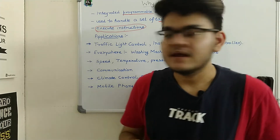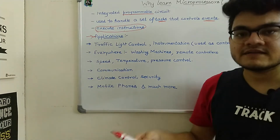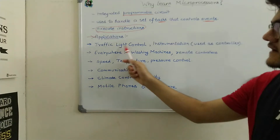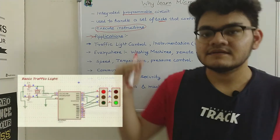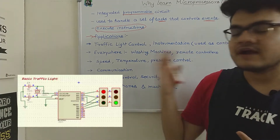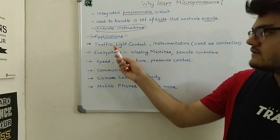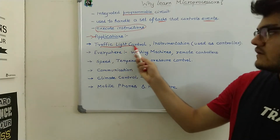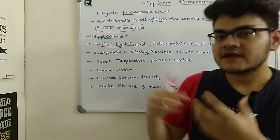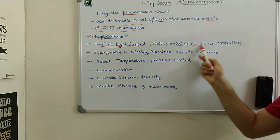Let's look at the applications of microprocessors. Take traffic light control — traffic lights have a timing sequence that cycles from red to green to yellow. This is actually controlled by a very small circuit we call a microprocessor, because it is doing some processing.